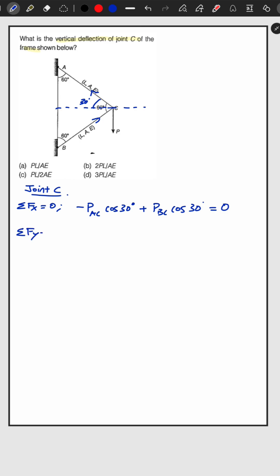Similarly summation of Fy equal to zero. So it will be PAC sin 30 and plus PBC sin 30 will be equal to P.